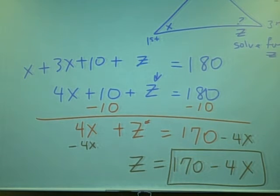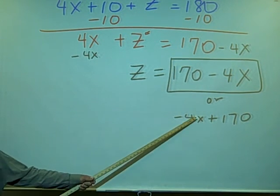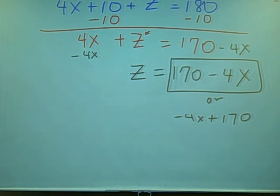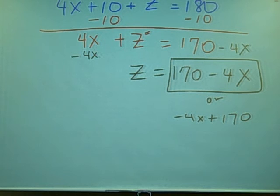Questions with that? So our third angle, in terms of x, is 170 minus 4x. Or you could also say negative 4x plus 170. So you could have also said negative 4x. Either way, as long as the signs are right, it really doesn't matter. And normally, the variable, it's proper to put the variable first. Alright, questions with that?